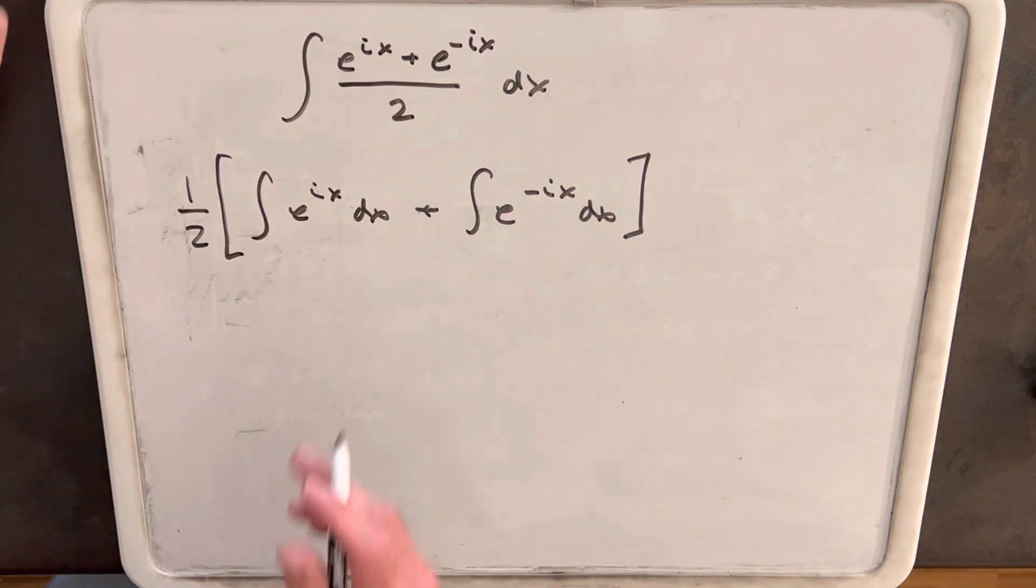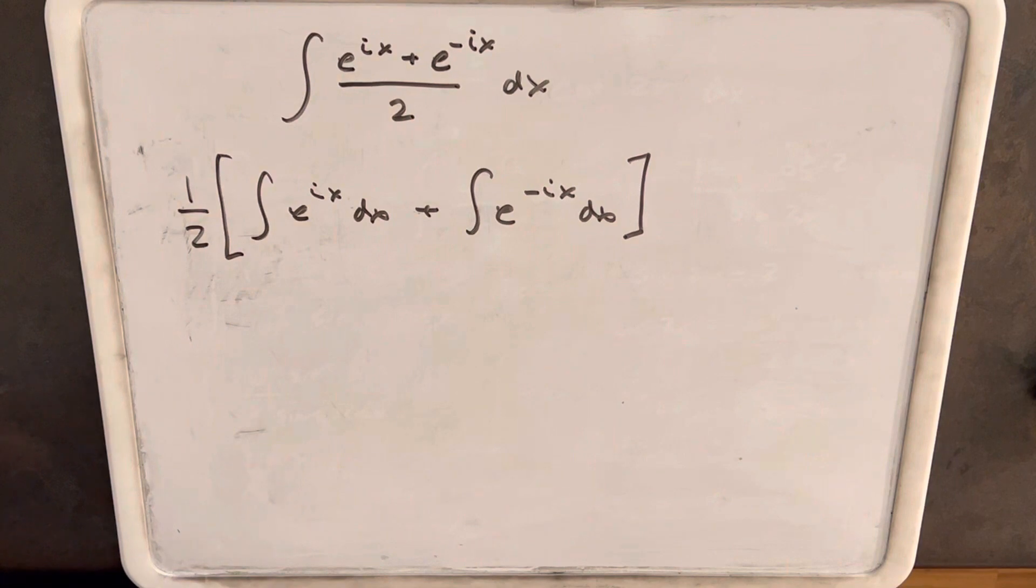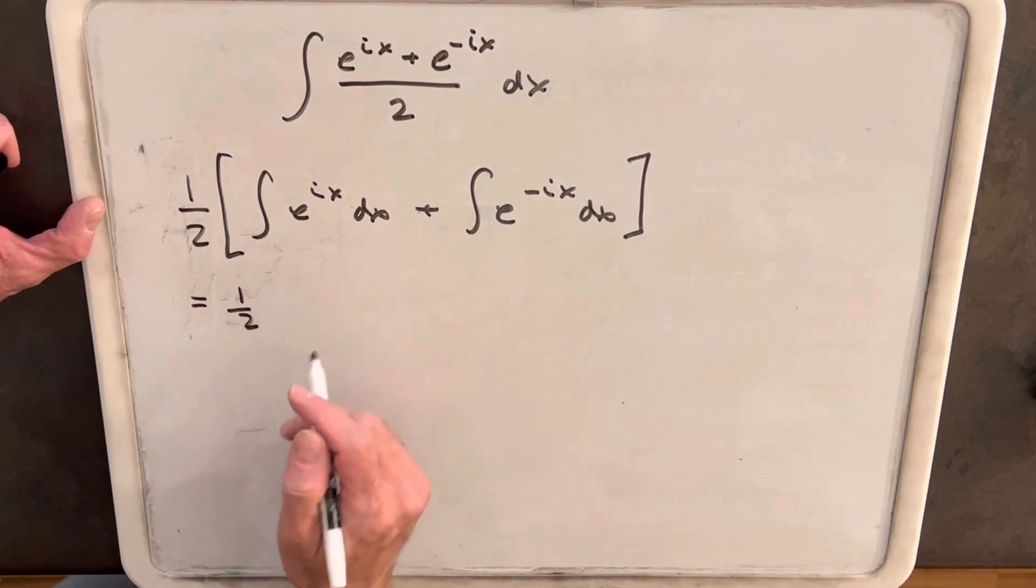Then one common problem that people might have here is they may not know what to do with this i, but it turns out that i is just a constant value, and you could treat it like it was any other number, and you could do a u substitution, or you can kind of do a u substitution in your head. So we'll do that when we integrate this. We'll integrate each of them.